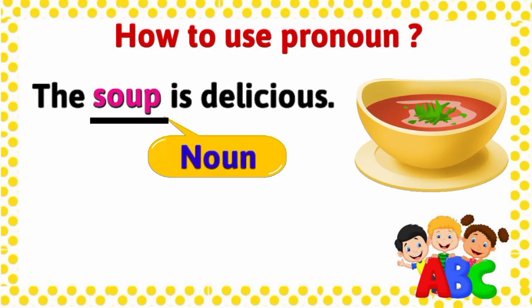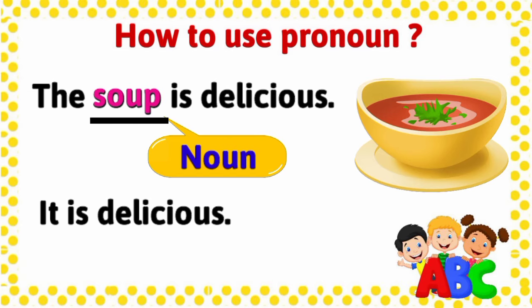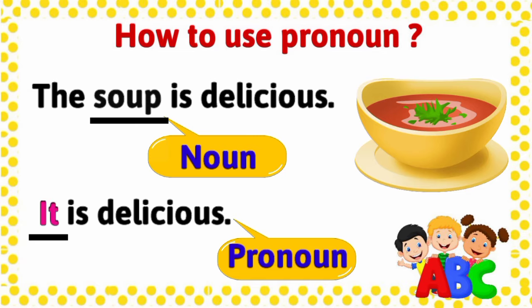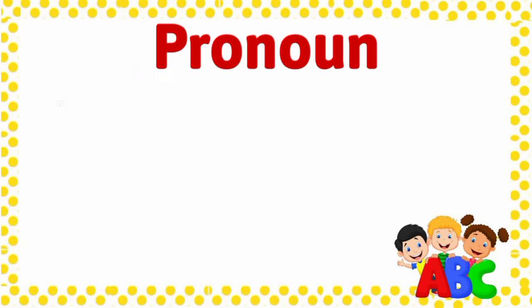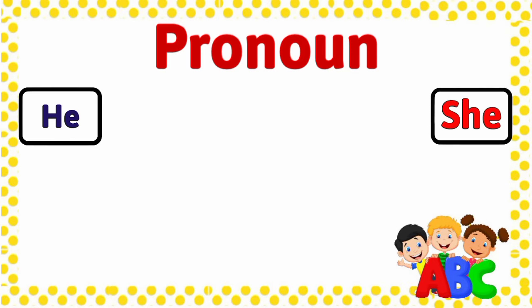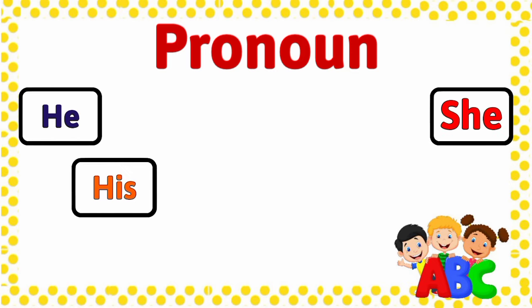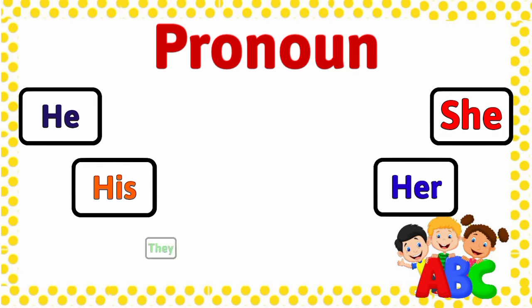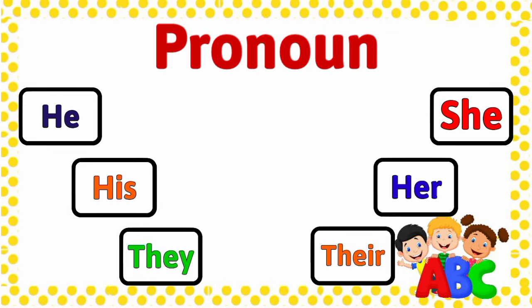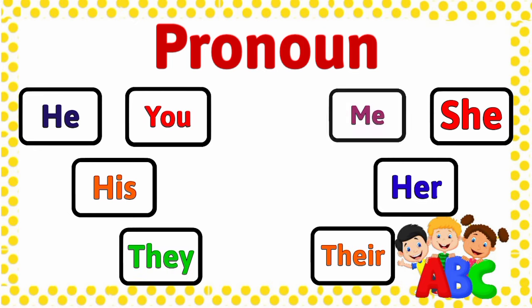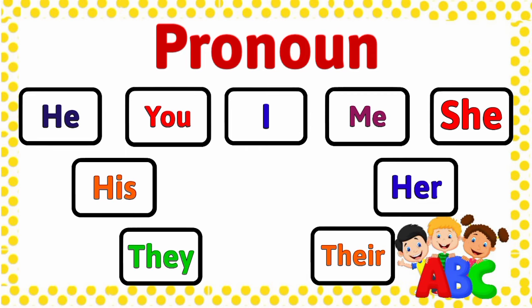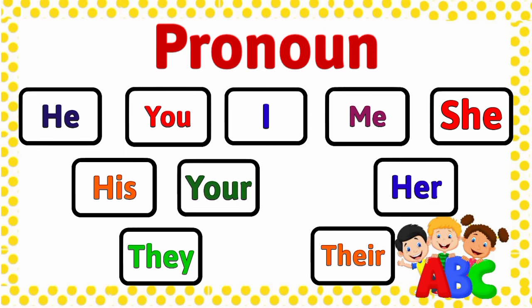'The soup is delicious.' Here, the word 'soup' is a noun as it's the name of a dish. 'It is delicious.' We use the word 'it' in place of the word 'soup,' so 'it' is a pronoun. So we learned different usages of pronouns, and all these words can be used in different kinds of sentences. Pronouns make our writing and speech flow much more smoothly.